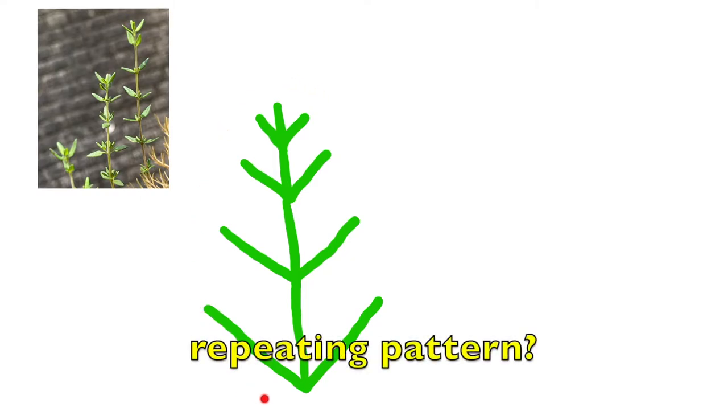Now can you see the repeating pattern of this shape? By repeating pattern, we mean the largest possible shape after duplication can produce the whole shape.